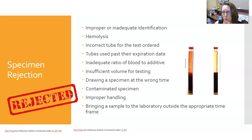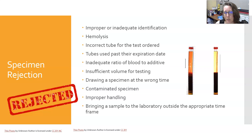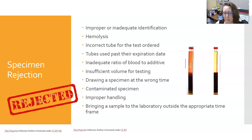If the incorrect tube was submitted for the test ordered, that is a reason for rejection. Tubes are often not interchangeable, and it is not appropriate to pour blood from one tube type into another — it must be collected in the correct tube. Tubes used past their expiration date can cause incomplete fill and improper preservation. An inadequate ratio of blood to additive — especially for blue tops — can cause erroneous results. Insufficient volume for testing or a specimen drawn at the wrong time are also reasons for rejection.